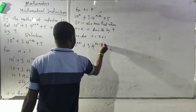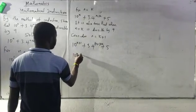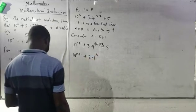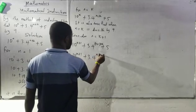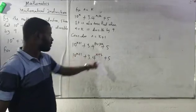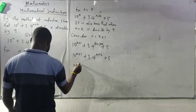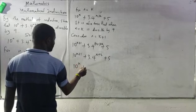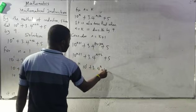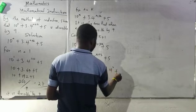Don't forget — k plus 1 plus 2 gives k plus 3. So I will be having 10 raised to the power of k plus 1, plus 3 dot 4 raised to the power k plus 3, plus 5. I can split this as: 10^k dot 10^1 plus 3 dot 4^(k+2) dot 4^1 plus 5. Because k plus 2 plus 1 gives k plus 3.